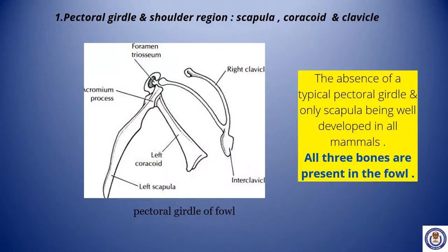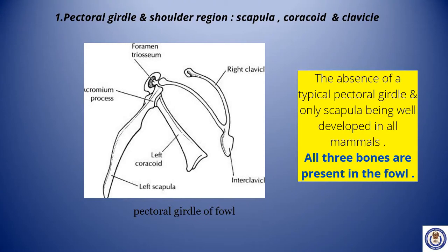Pectoral girdle and shoulder region includes scapula, coracoid and clavicle. There are some significant modifications to be noted here — the absence of a typical pectoral girdle, with only scapula being well developed in all mammals. All three bones are present in the case of fowl.